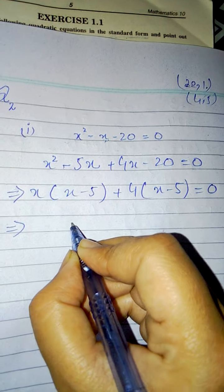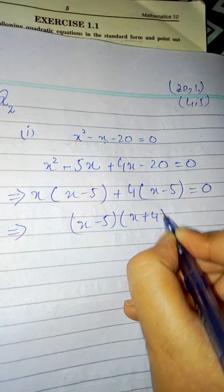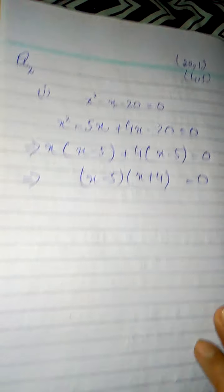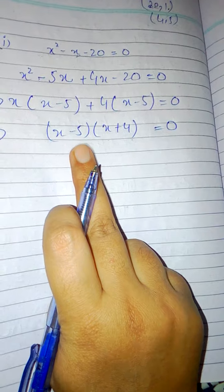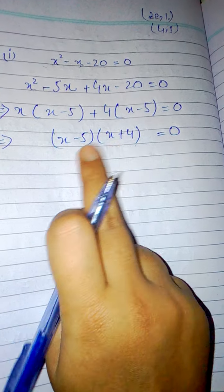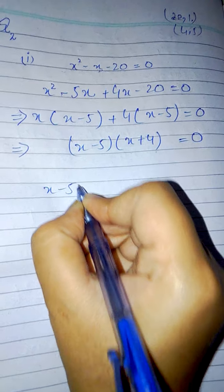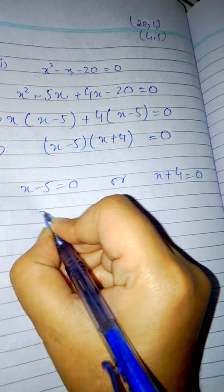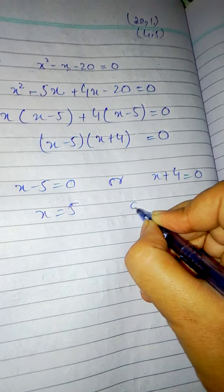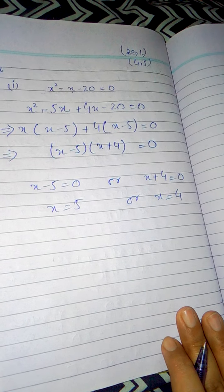This implies that x minus 5 and x plus 4 is equal to zero. You know what this means - we have discussed this in detail. This form means either this factor is zero or this factor is zero. At one time both cannot be zero. So x minus 5 equals zero and x plus 4 equals zero. Here x value will be 5 and here x value is negative 4.